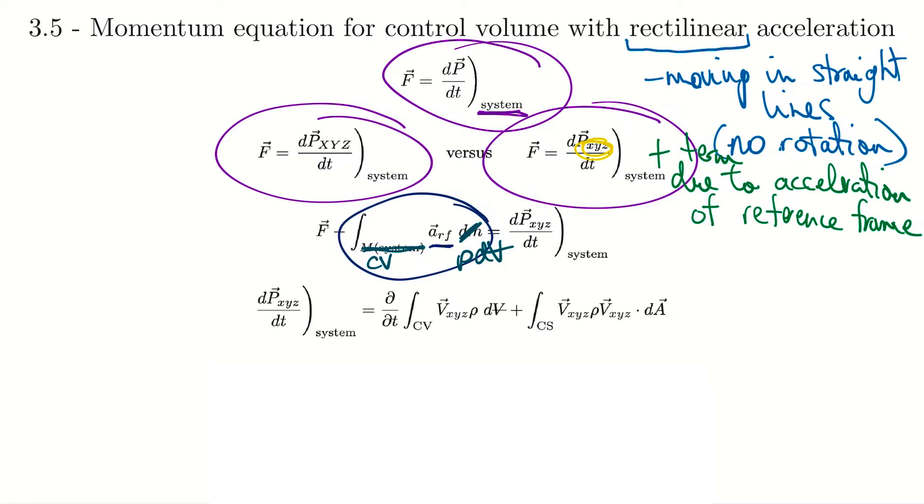On our next line is what we've seen before, how we balance the rate of change of the linear momentum. We remember on the right those two terms account for the rate of change of the linear momentum of the matter within the control volume, and then the term that accounts for the linear momentum that's crossing the boundaries across CS, which is our control surfaces.